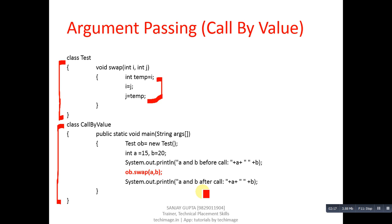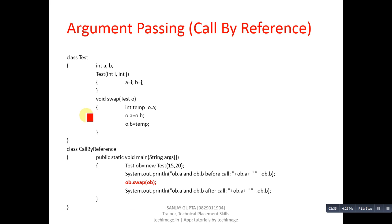We are swapping values of i and j inside the swap function, but the actual arguments are unaffected. If you want the formal parameters to affect the actual parameters, you have to follow the call by reference method instead of call by value.